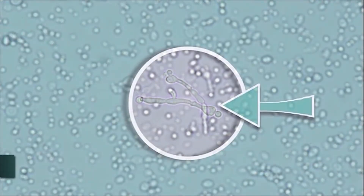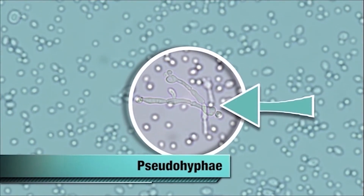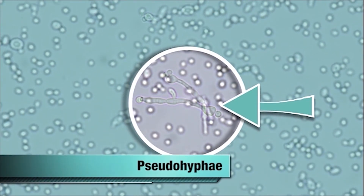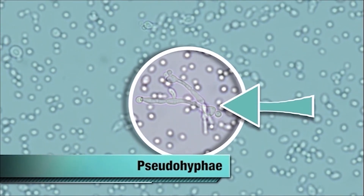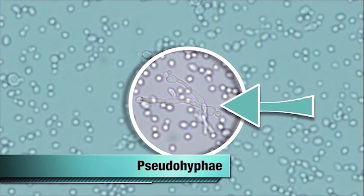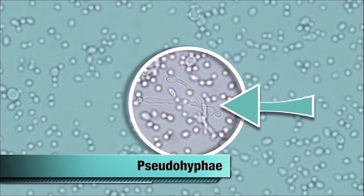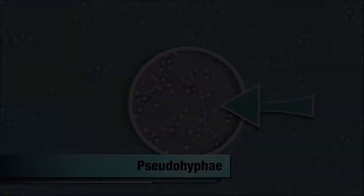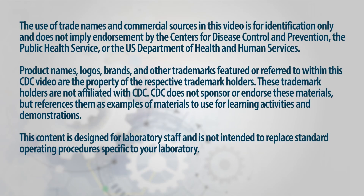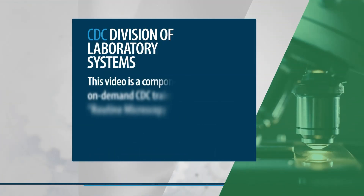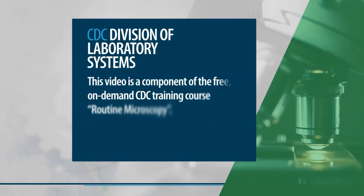If yeast forms or pseudohyphae are seen, they can only be reported as yeast present, since identification of genus and species is not possible in a KOH preparation. Follow your laboratory's policy for reporting the results.